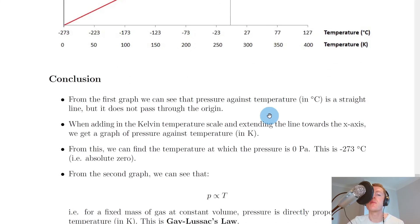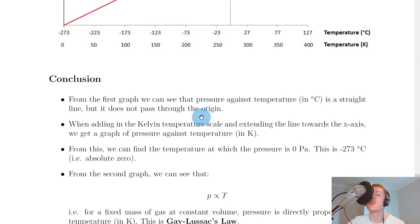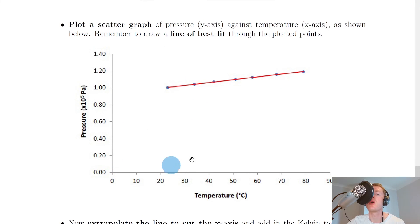So it says here that from the first graph we can see that pressure against temperature in degrees Celsius is a straight line but it does not pass through the origin. So that was this one here so it was a straight line that was far away from the origin. When adding in the Kelvin temperature scale and extending the line towards the x-axis we get a graph of pressure against temperature in Kelvin rather than degrees Celsius. From this we can find the temperature at which the pressure is 0 Pascals. This is minus 273 degrees Celsius i.e. absolute zero.